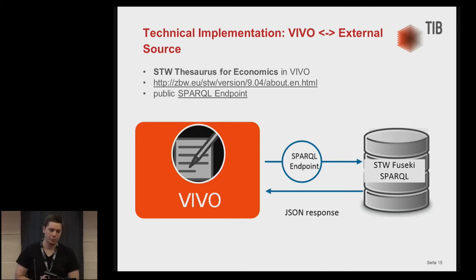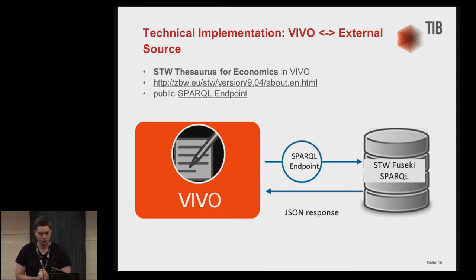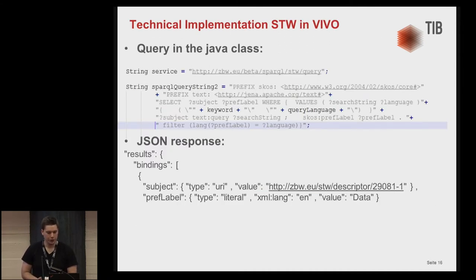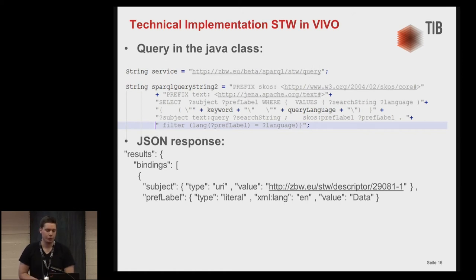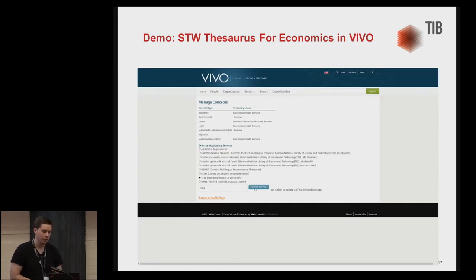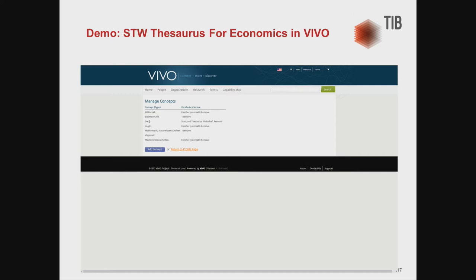Here you can see the technical implementation using an external source — specifically, how the VIVO installation uses the STW Thesaurus for Economics from the Leibniz Institute for Economics. VIVO sends a SPARQL request to the Fuseki server and receives a JSON response. Some existing Java classes in VIVO were refactored and the targeted URL was changed. In the next animation, you can see a different lookup service being used with a different search term, and the new concept is added to VIVO.